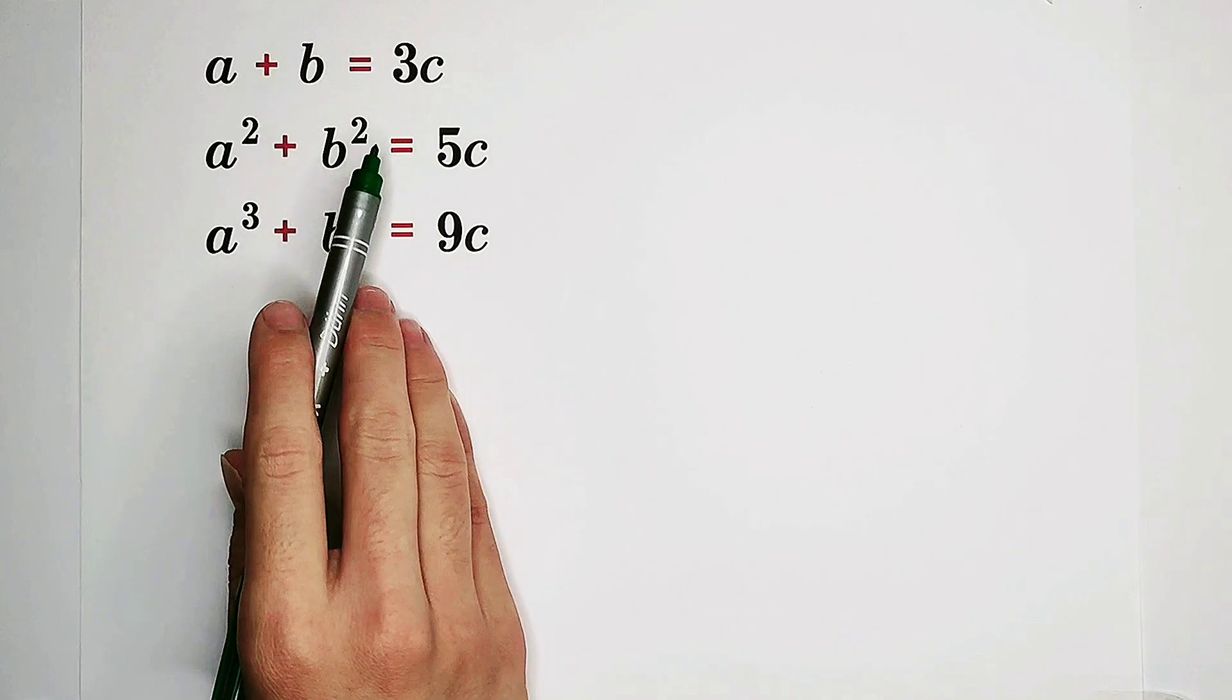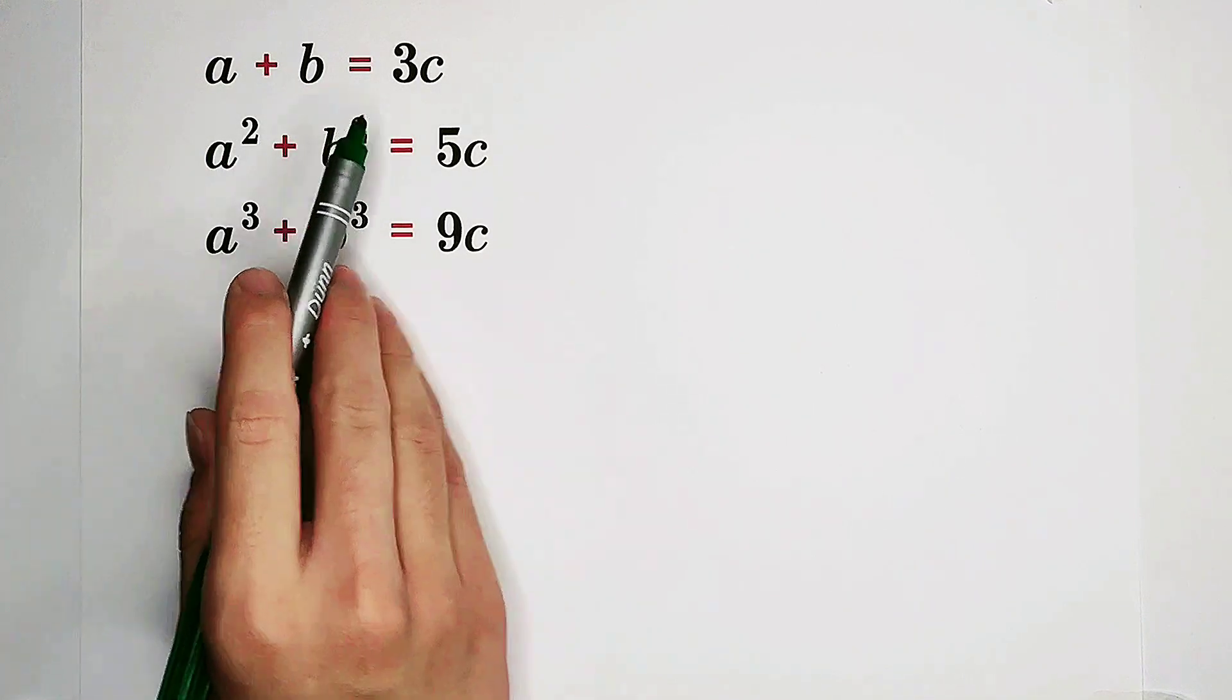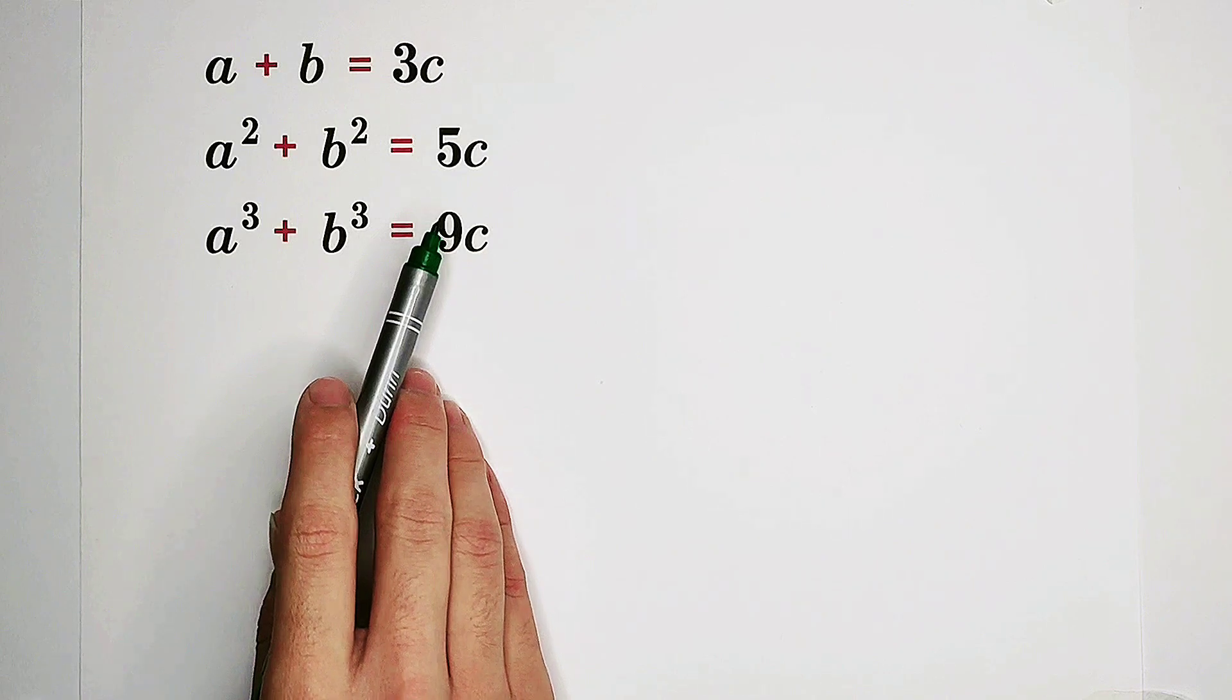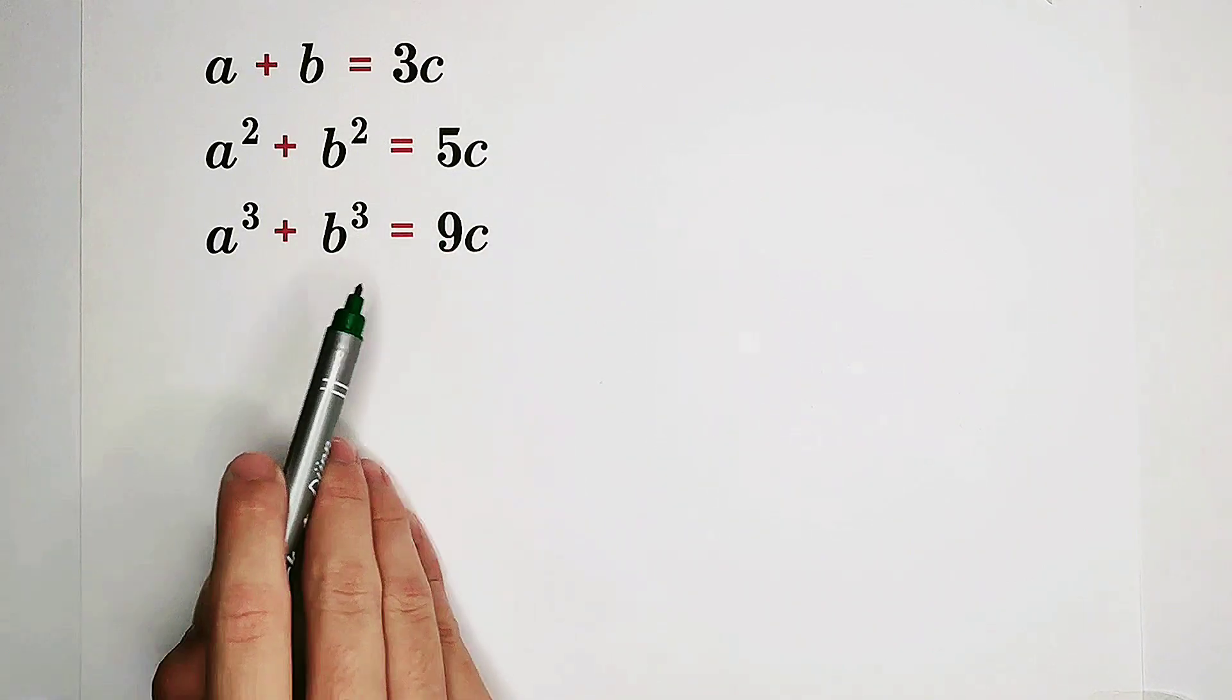Solve for all real numbers a, b, and c such that a plus b equals 3c, a squared plus b squared equals 5c, and a cubed plus b cubed equals 9c.